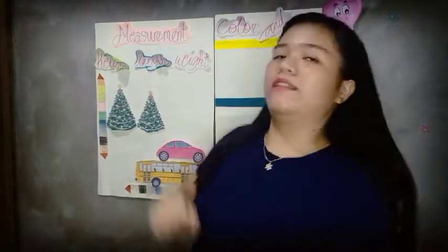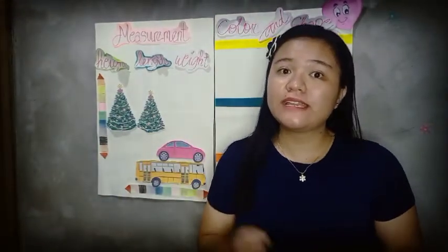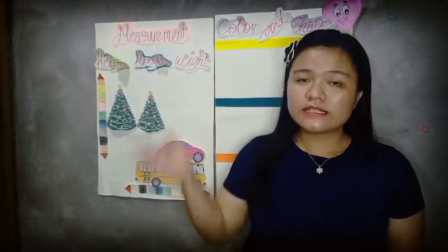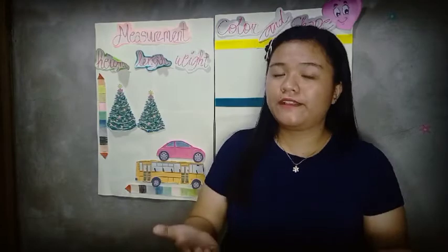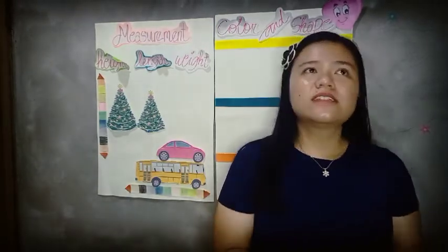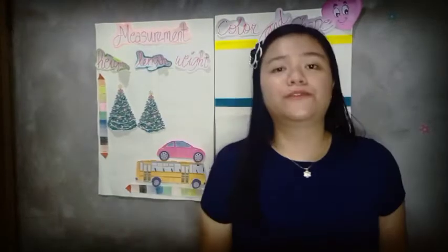Let's proceed to weight. How are we going to measure an object by its weight? When we describe an object by weight, we describe it as heavy or light — mabigat o magaan. That is the basic description for describing an object by the measurement of weight.